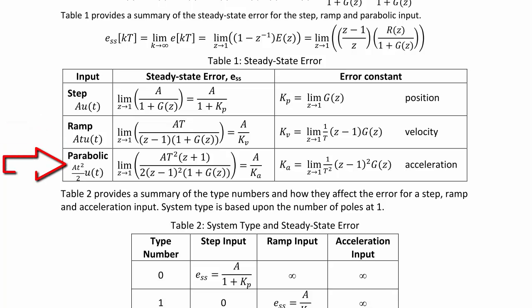Finally, for the parabolic input A·t²/2·U(t), the steady state error is the limit as Z goes to 1 of A·T²·(Z plus 1) over 2(Z minus 1)² times 1 plus G(Z), which equals A over KA, where KA is the acceleration constant — the limit as Z approaches 1 of (1/T²)(Z minus 1)²G(Z).